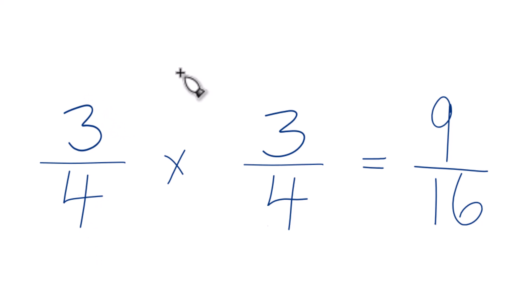So 3 fourths times 3 fourths, that gives you 9 sixteenths. Or you could say 3 fourths of 3 fourths, that's 9 sixteenths as well.